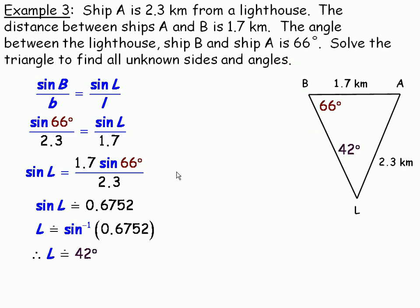So, we'll put the 42 degrees in the diagram there. Now, we can find this angle, and then we can find side A. So, if we subtract 66 and 42 from 180, we'll get angle A to be about 72 degrees. So, we'll put 72 degrees in the triangle, and now we can find side A.